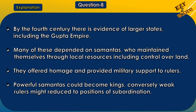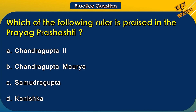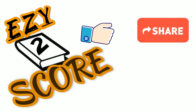These were the MCQs based on the Kushana and Gupta Empire. Hope this episode will be helpful for you to understand these topics and solve questions easily. Soon I will be back with MCQs of other important topics. Before that, let's look at today's practice question: Which of the following rulers is praised in the Prayag Prashasti? Options: A. Chandragupta II, B. Chandragupta Maurya, C. Samudragupta, D. Kanishka. You must know the right answer, so write it in the comments. You can also watch previous episodes of MCQs on important topics of Class 12th History NCERT using links given below in the description. Keep watching. Please don't forget to like, share, and subscribe.